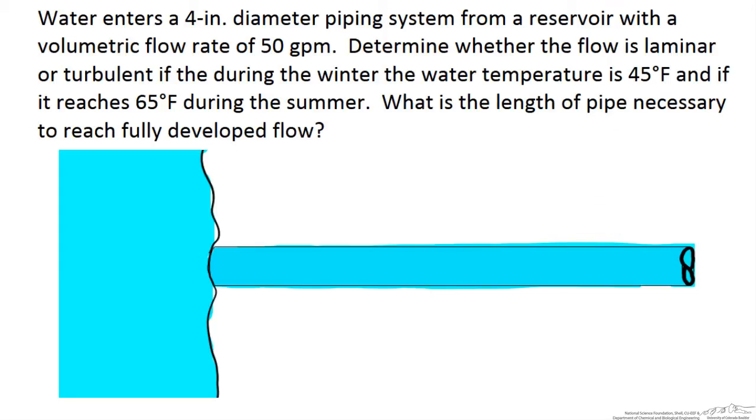So the question is first asking us to determine whether the flow through this pipe is laminar or turbulent. We have water entering the pipe from this reservoir and it will reach a fully developed state after some entrance length. This entrance length will be dependent on whether or not we have laminar or turbulent flow, so therefore it's important to determine that first.